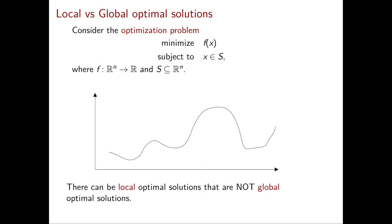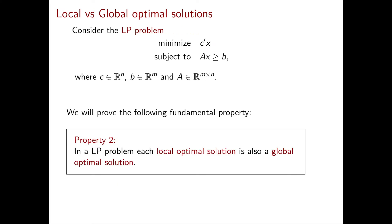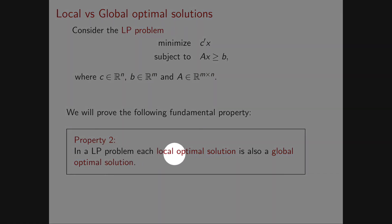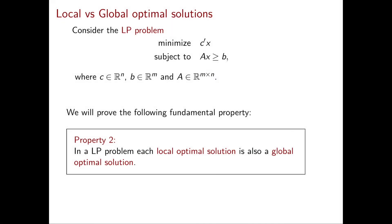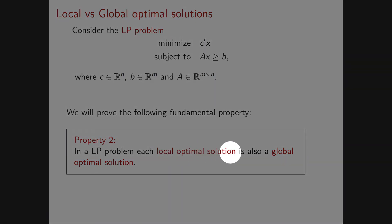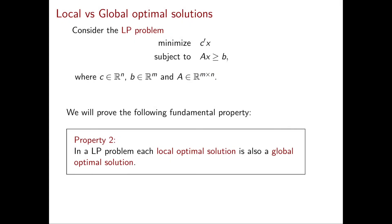In this course, are we going to discuss local or global optimal solutions? Fortunately, in our setting we don't need to distinguish between the two. This is because of the next fundamental property of linear programming: every local optimal solution is also a global optimal solution. Since the reverse containment is obvious, local and global optimal solutions coincide for linear programming problems.